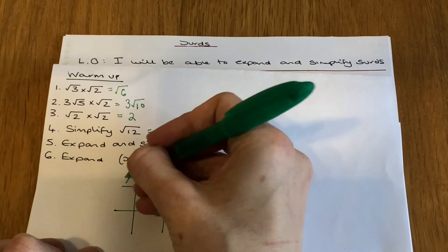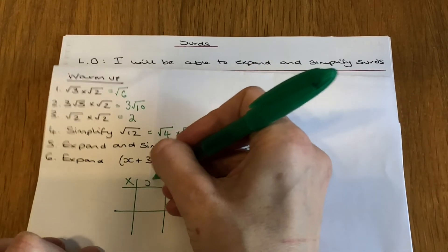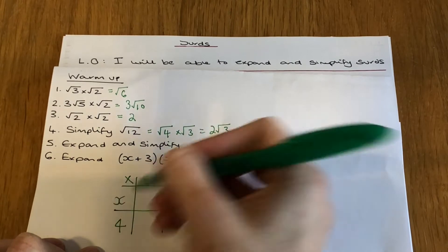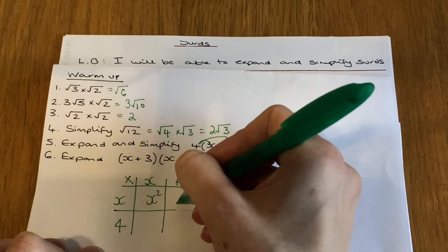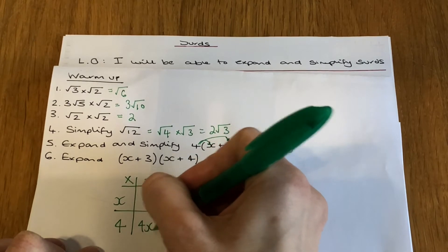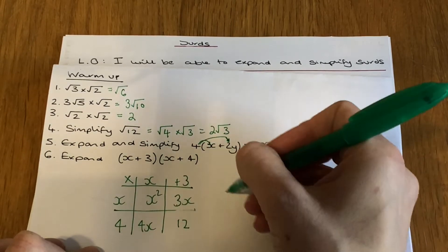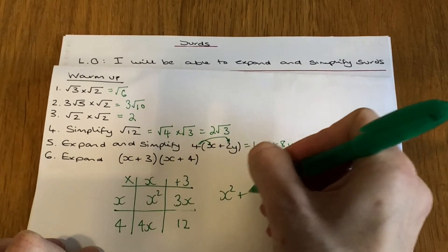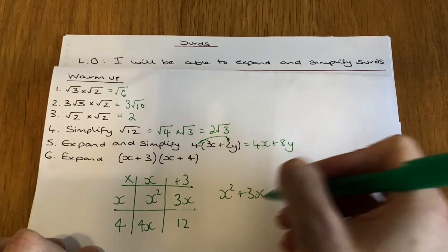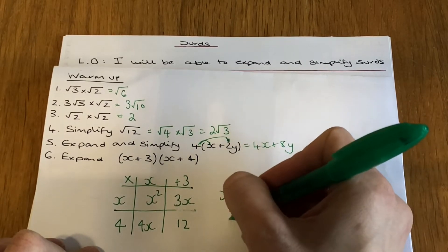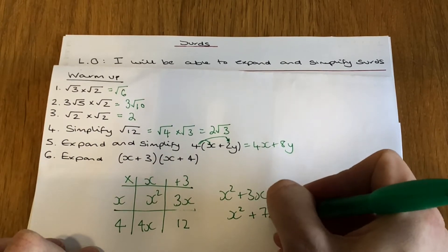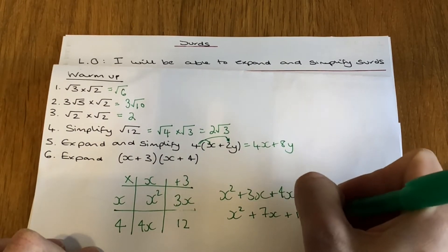You might have another method to do that — that's fine — but I think the grid method is the easiest way. So x times x is x squared, we get 3x, 4x and 12. When we simplify, I've got x squared + 3x + 4x + 12. I can add my x's together, so I get x squared + 7x + 12.